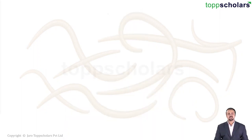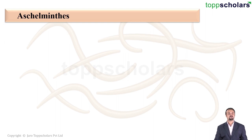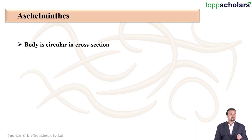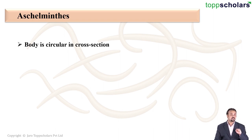Hello students and welcome to Top Scholars. Today I am back with another very interesting topic — Phylum Aschelminthes. These worms are circular in their cross-section. If you cut a worm transversely and look at the cross-section, you will see a round or circular pattern.